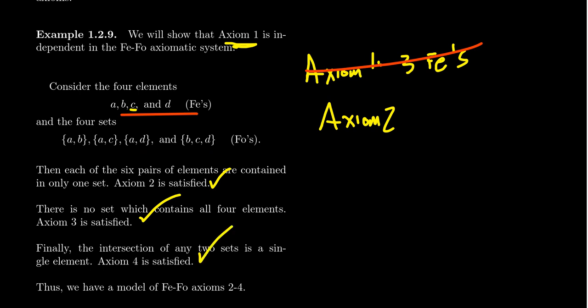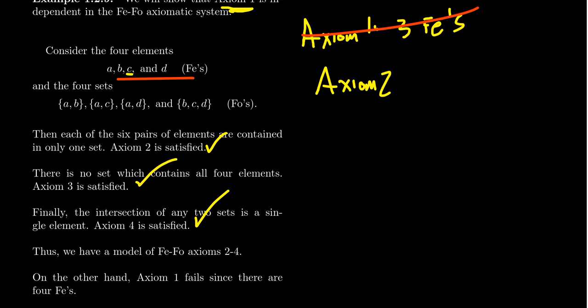Axioms two, three, and four are all satisfied, but axiom one is not. Therefore, since we have a model for axioms two through four of the FIFO theory where axiom one fails, this shows that axiom one is independent of the other axioms. I'll leave it as an exercise to prove that axioms two, three, and four are likewise independent.